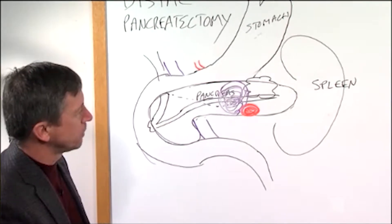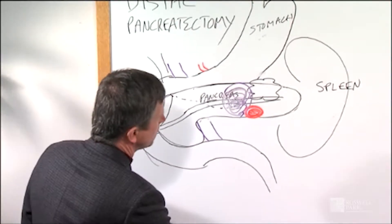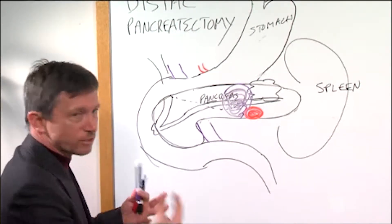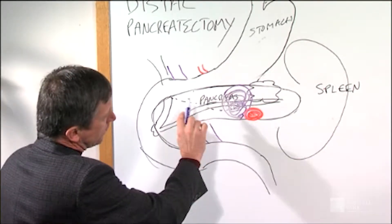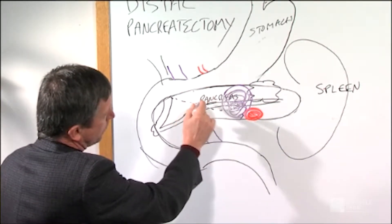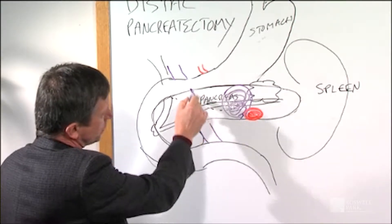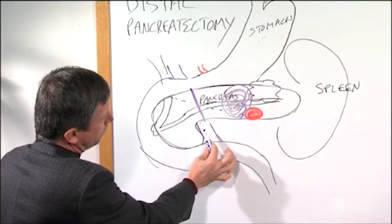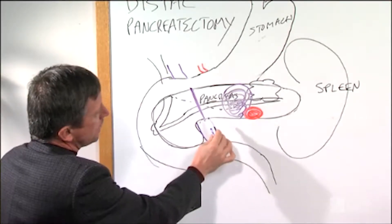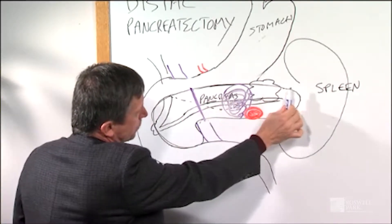For a distal pancreatectomy, what I'd like to show is actually what the procedure entails. So the distal pancreas is typically removed up to this point here, which would be the neck of the pancreas, and that's on top of some major blood vessels right behind the neck. So the tail of the pancreas is removed.